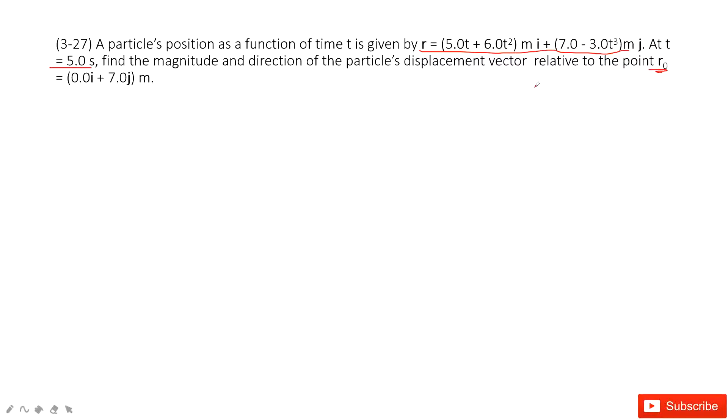So in this one, we can say we need to find the displacement vector. Any displacement vector delta r is the final position minus the initial position. Agree? Yes.